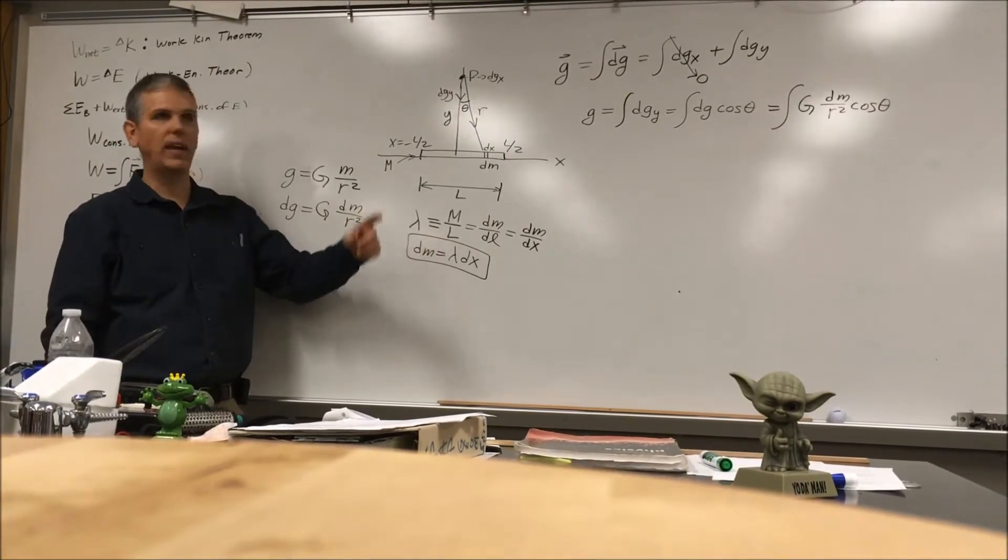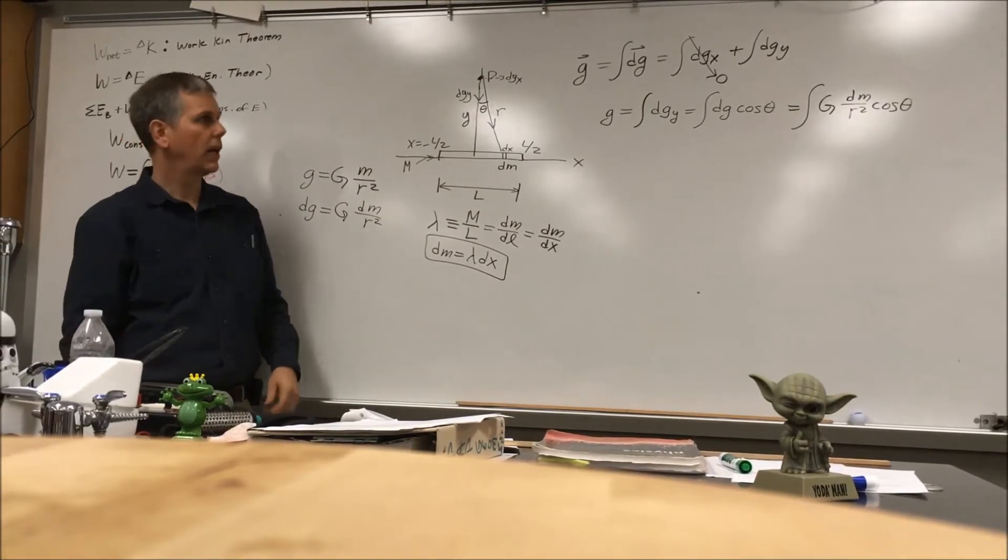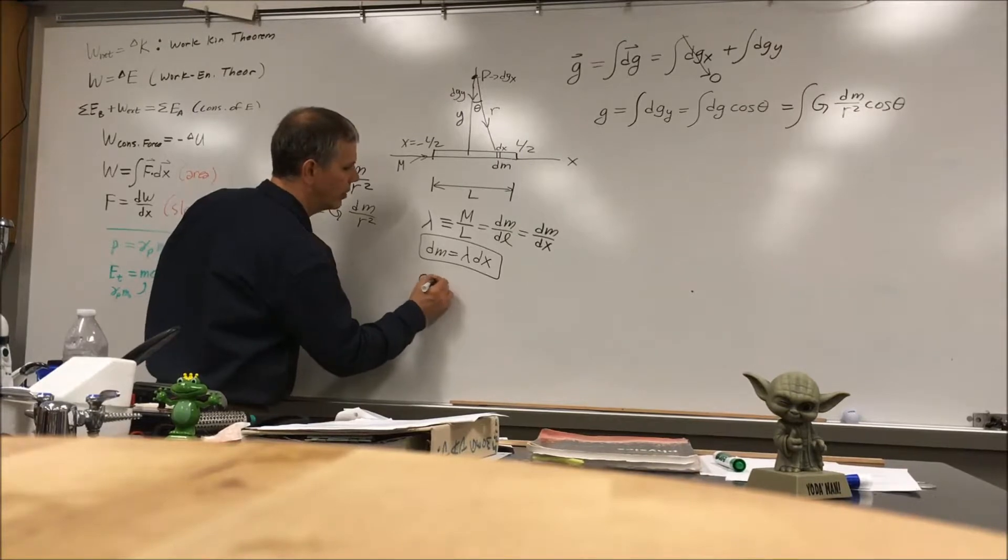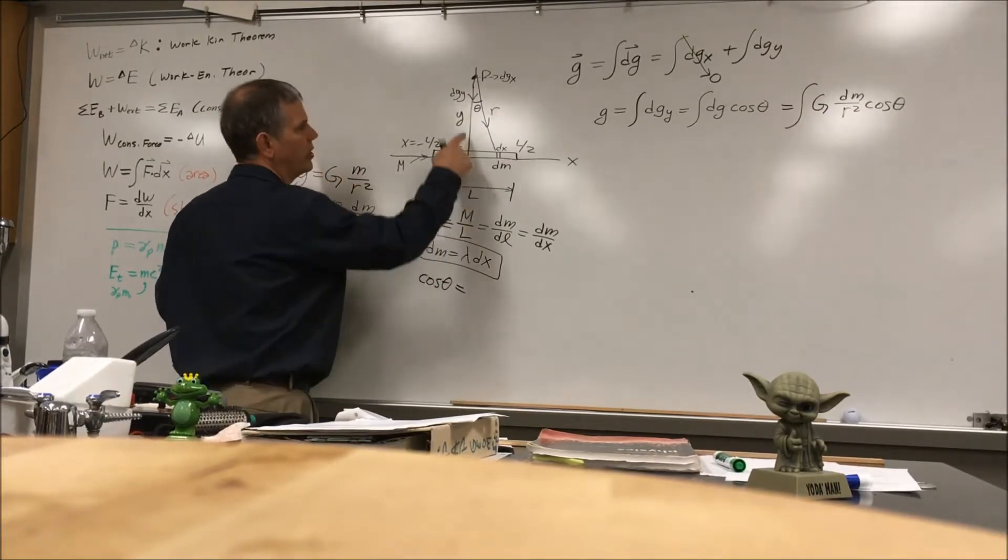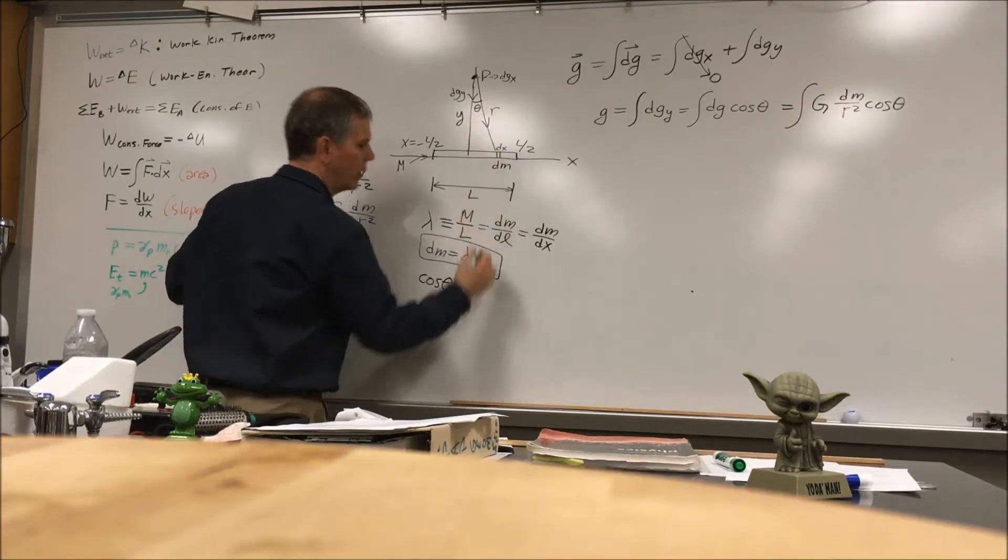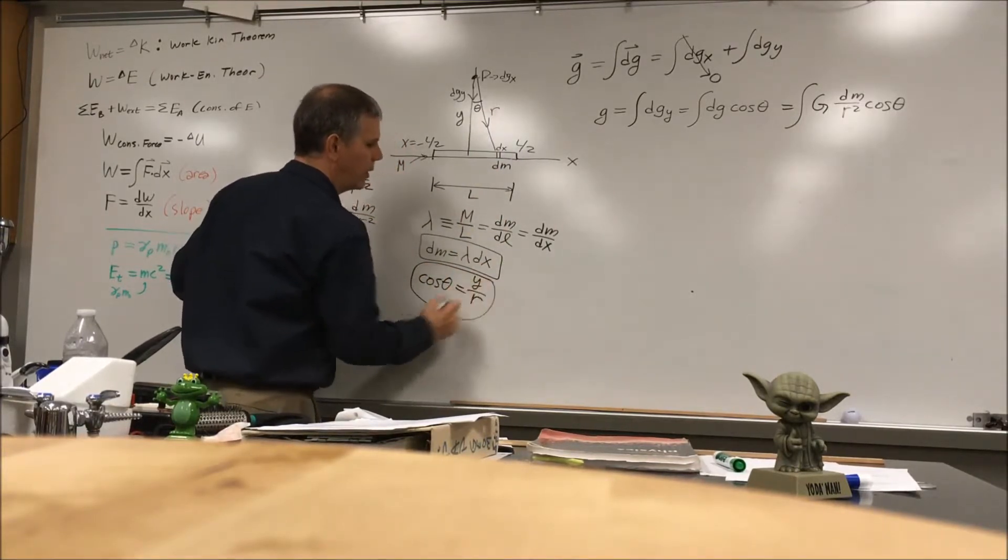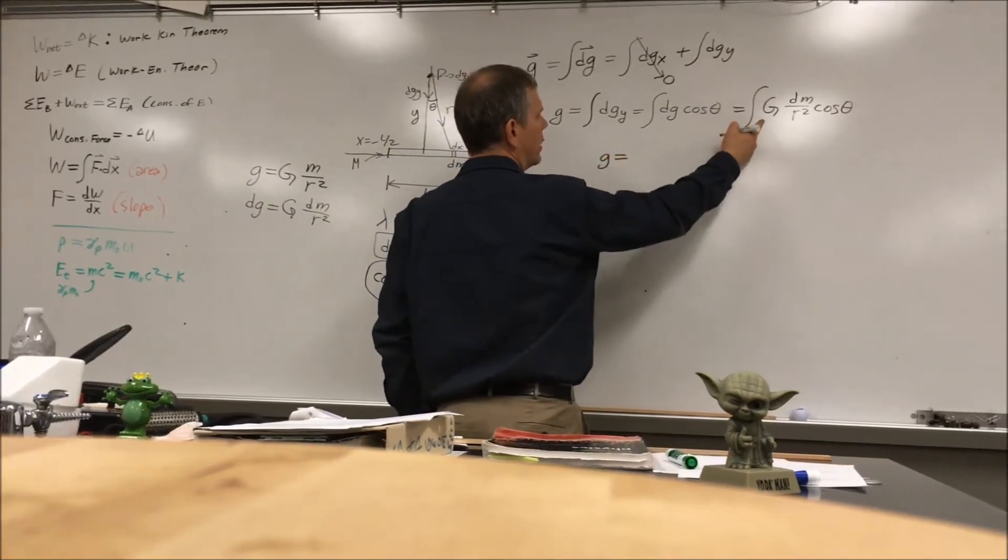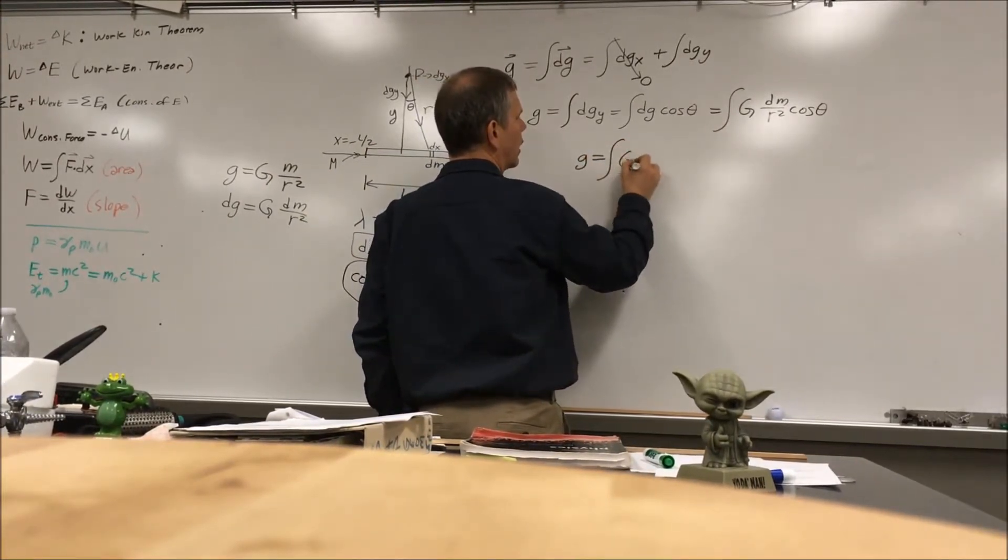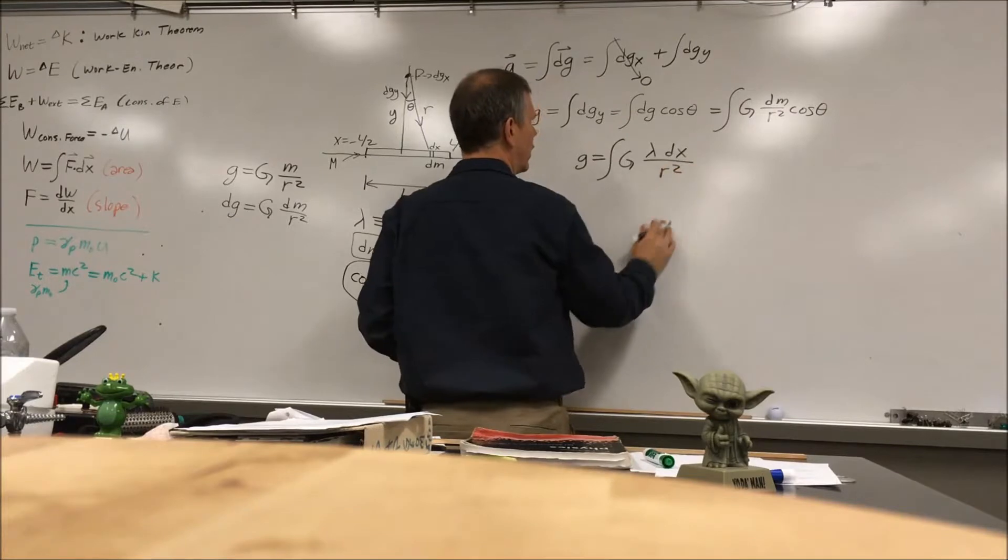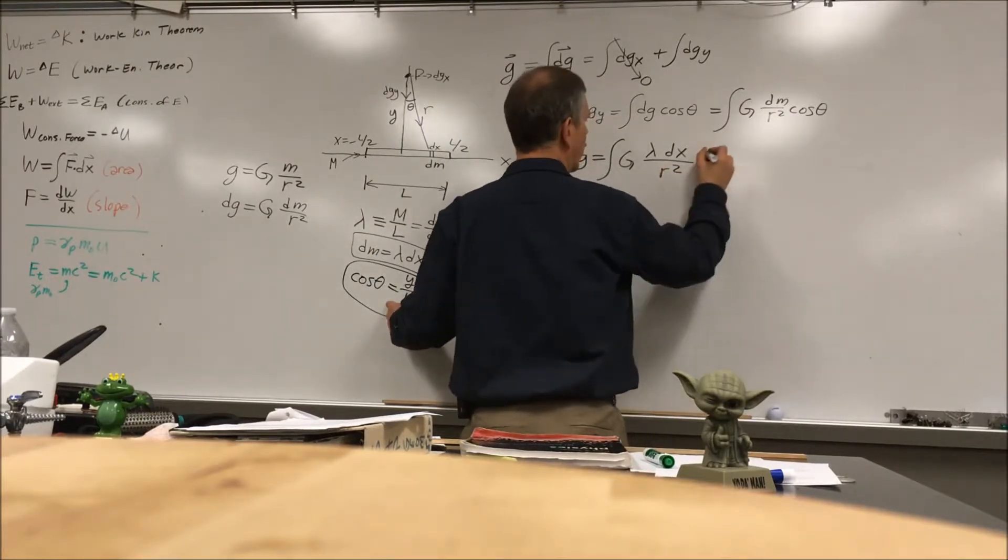We got to get rid of the theta there, don't we? So the cosine of theta equals adjacent over hypotenuse, which is y over r. Let's plug all that in. G equals big G, dm which we just found, lambda dx over r squared times the cosine of theta, which is y over r. And that gives me integral big G lambda dx times y over r cubed.